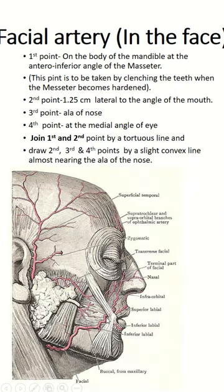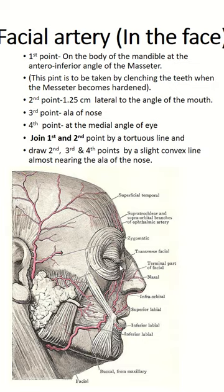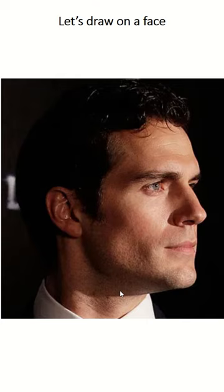The second point is 1.25 centimeters lateral to the corner of the mouth. The third point is at the ala of the nose. The fourth point is at the medial corner of the eye. The first and second points are joined by a tortuous line. The second, third, and fourth points are joined by a convex line, with convexity toward the ala of the nose.